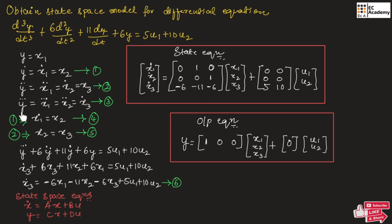Here, y-triple-dot is nothing but x3-dot. So in place of y-triple-dot we write x3-dot; 6y-double-dot becomes 6x3; 11y-dot becomes 11x2; and 6y becomes 6x1. That equals 5u1 plus 10u2. Rearranging for x3-dot: x3-dot equals minus 6x1 minus 11x2 minus 6x3 plus 5u1 plus 10u2. Let us call this equation number 6.